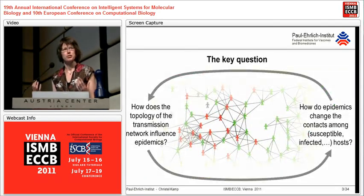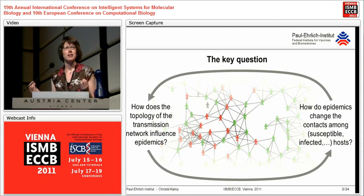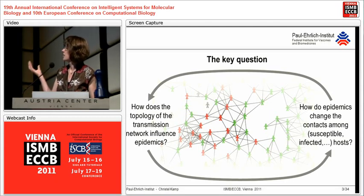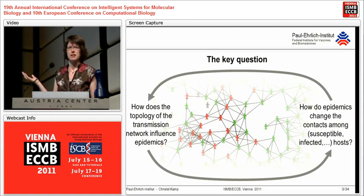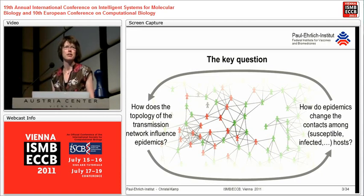What I'd really like to address is how far you could go on tackling this question analytically. The key question is how does the topology and the dynamics of the transmission network influence epidemics? This is basically a question which has been researched quite intensively during the last decade, and I think there are already quite a few answers.